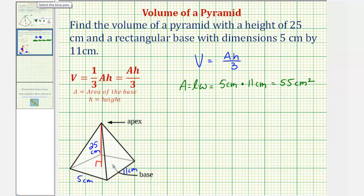Therefore, the volume equals 55 square centimeters times the height H, which is 25 centimeters, divided by 3.